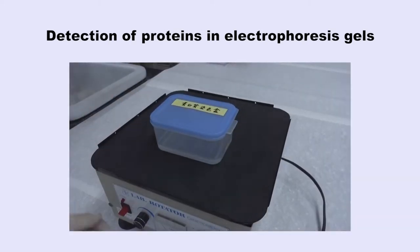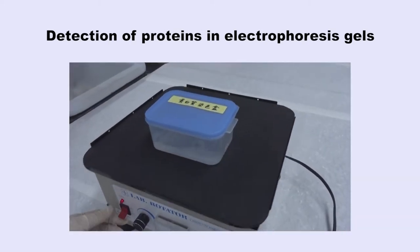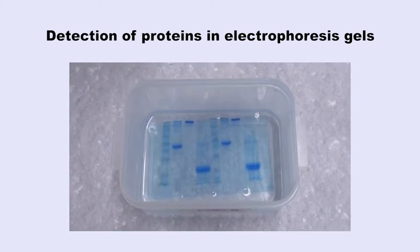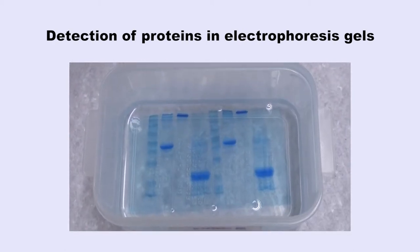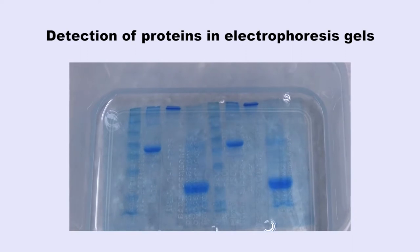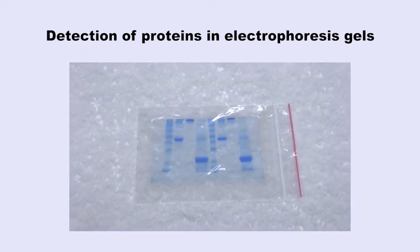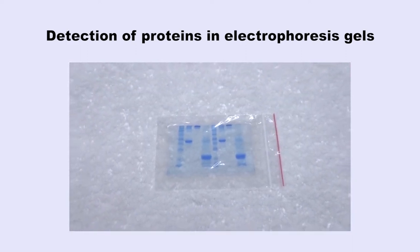Detection of Proteins in Electrophoresis Gels. A protein electrophoresis gel may be stained to reveal all protein bands. Alternatively, specific antibodies may be used to detect specific proteins.